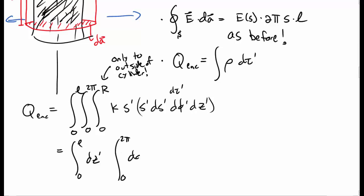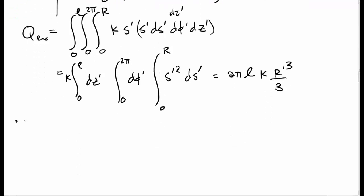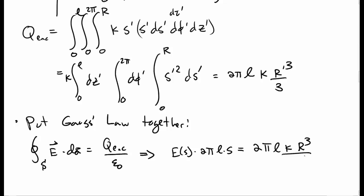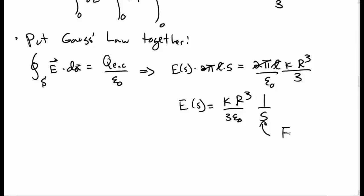These integrals are again three separate and straightforward integrals. We get 2πLkR³/3 — with R cubed rather than s cubed as in the previous case. Putting Gauss's law together: E times 2πsL equals 2πLkR³/3. Notice that factors of R do not cancel as they did before, and so we're left with the electric field equal to kR³/(3ε₀) times 1/s.